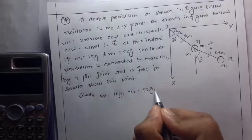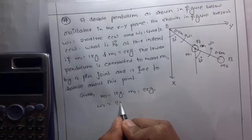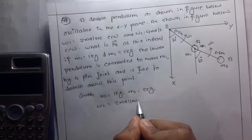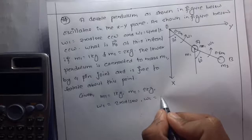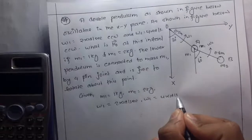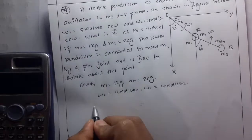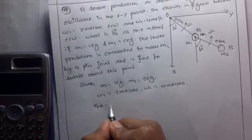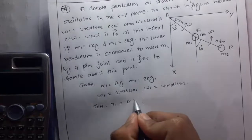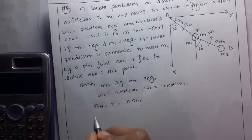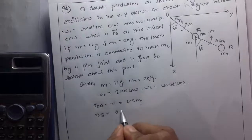Given: m1 = 1 kg, m2 = 2 kg, omega 1 = 2 rad/s, omega 2 = 4 rad/s, r_OA = r1 = 0.5 m, and r_OB = 0.6 m.